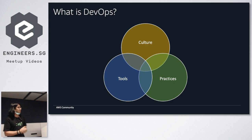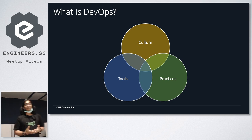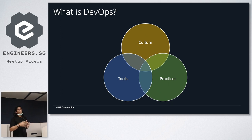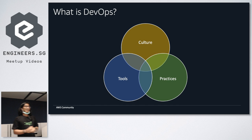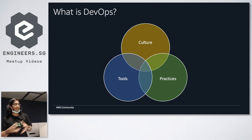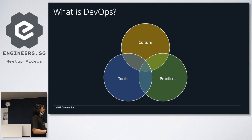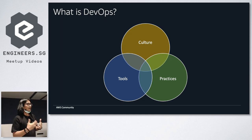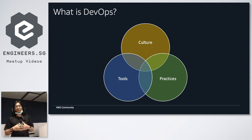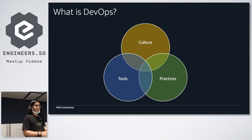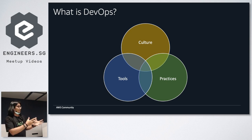Throughout my engagement across ASEAN and APAC, the very first question when I talk about DevOps comes from developers: what is actually DevOps? In a nutshell, DevOps is a combination of three elements: tools, practices, and culture. What makes DevOps really interesting is that each organization has a different approach on building and delivering applications — from development to staging to UAT to production. At AWS, we have pillars covering microservices, CI/CD, IaC, and monitoring and observability. But in a nutshell, it's a combination of those three components.